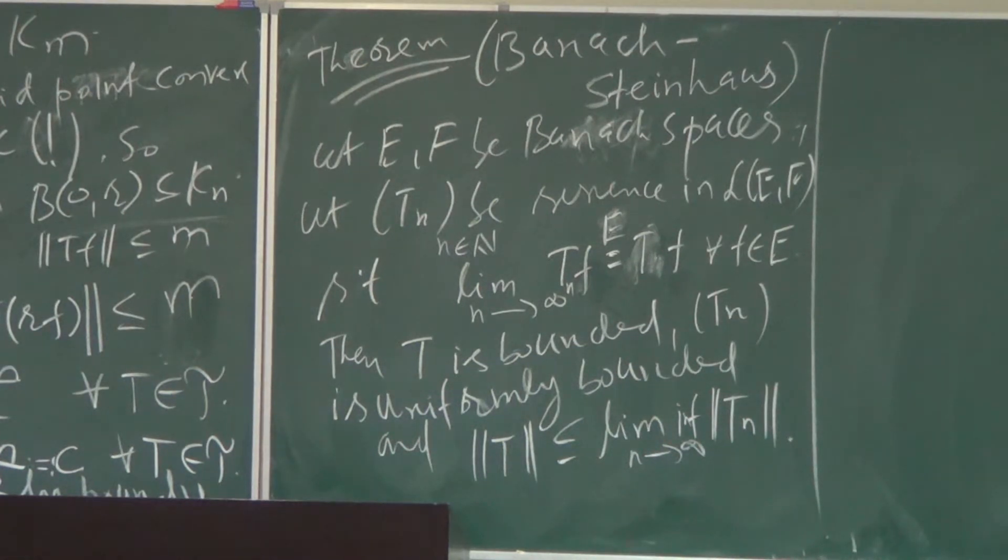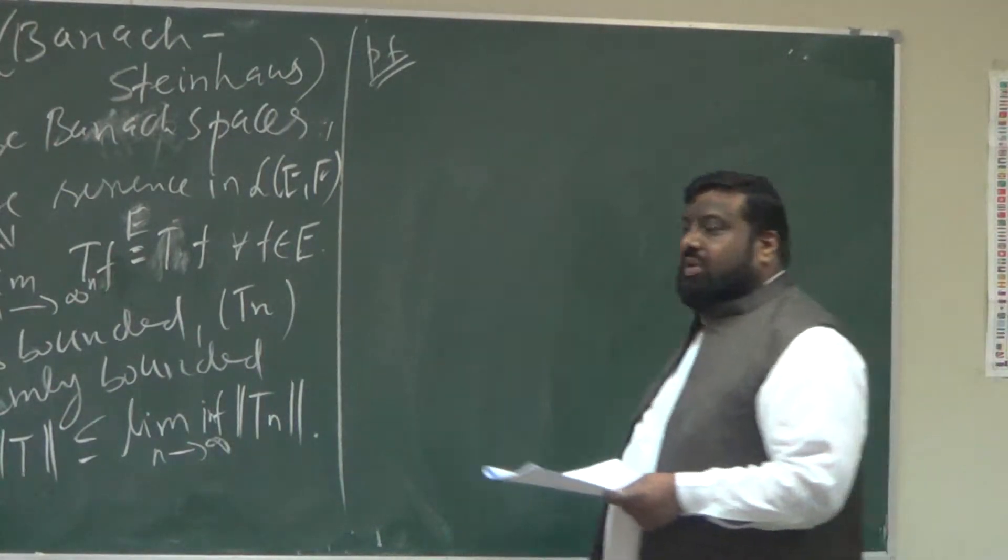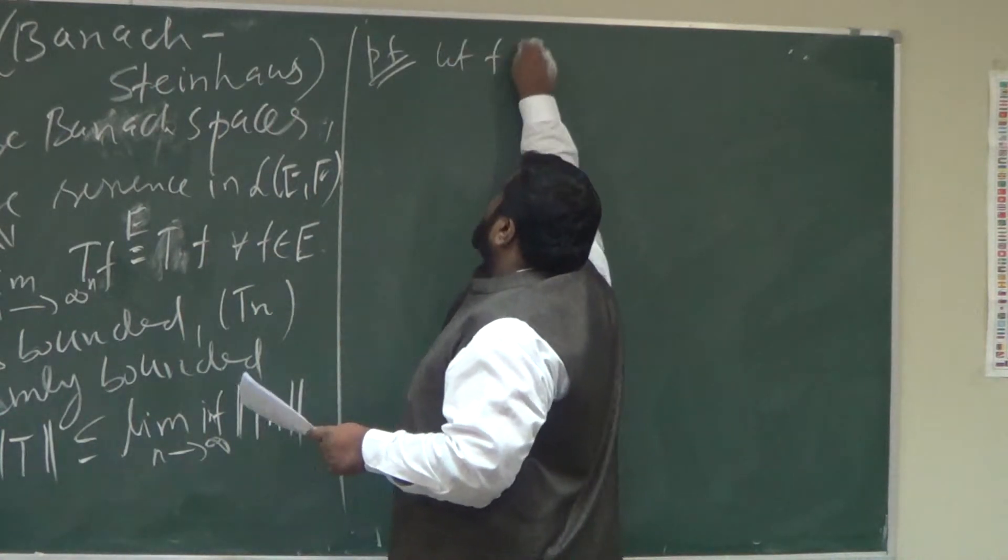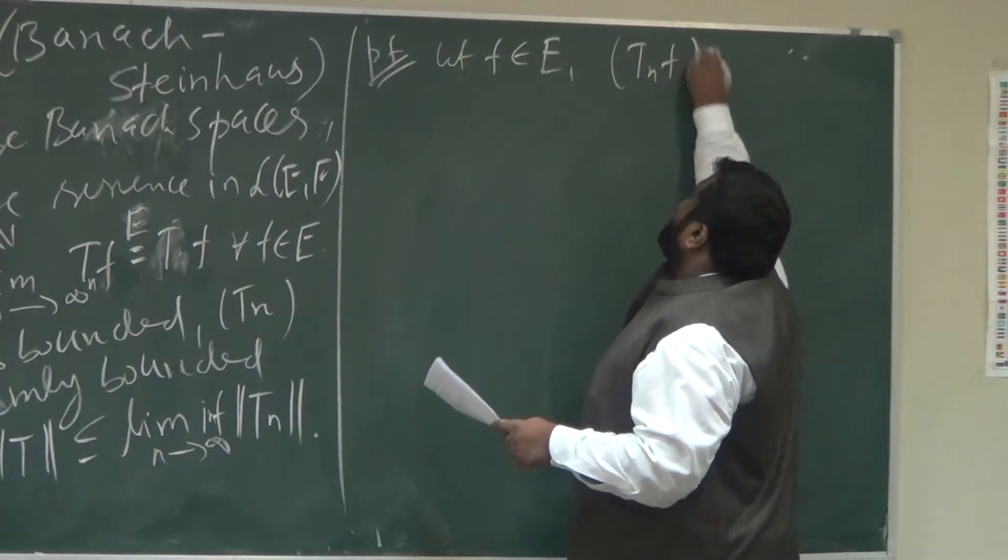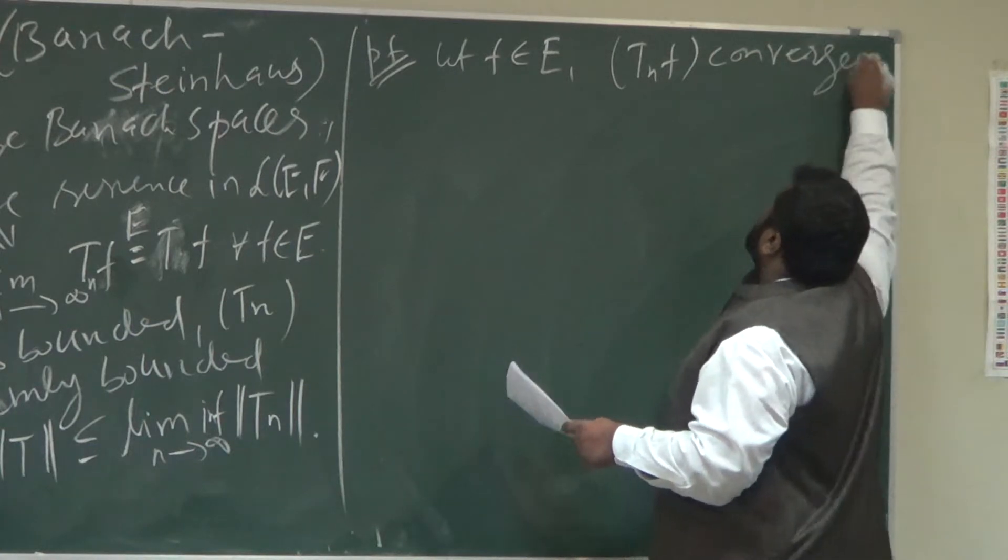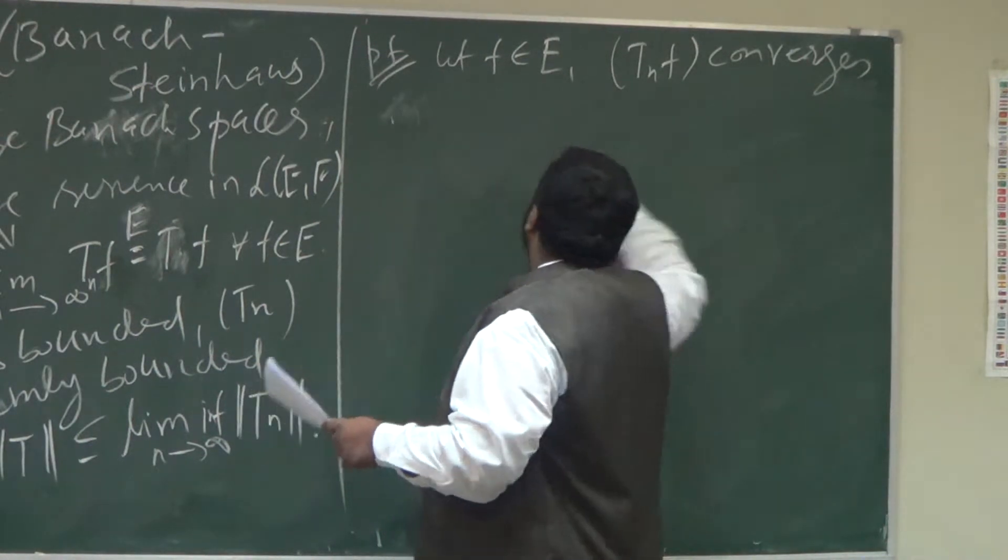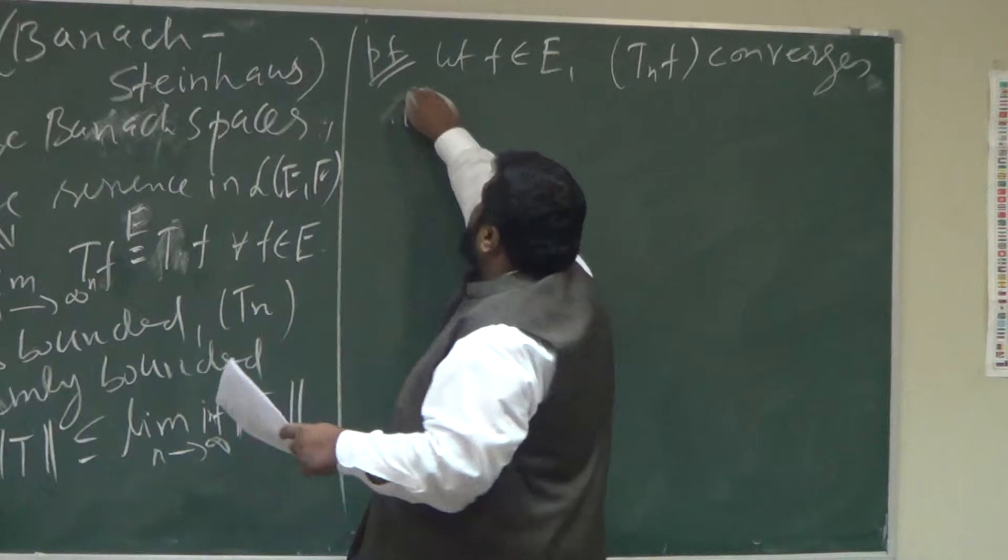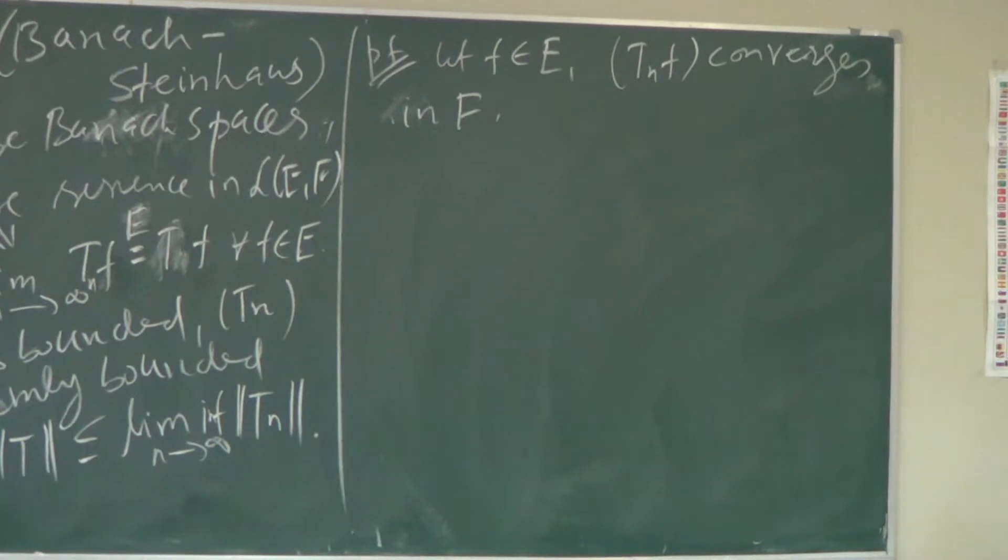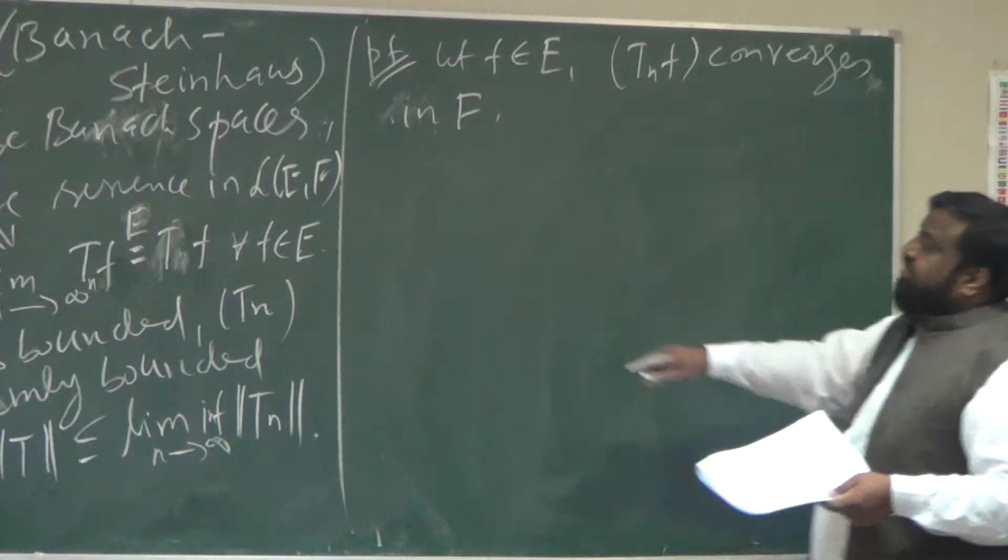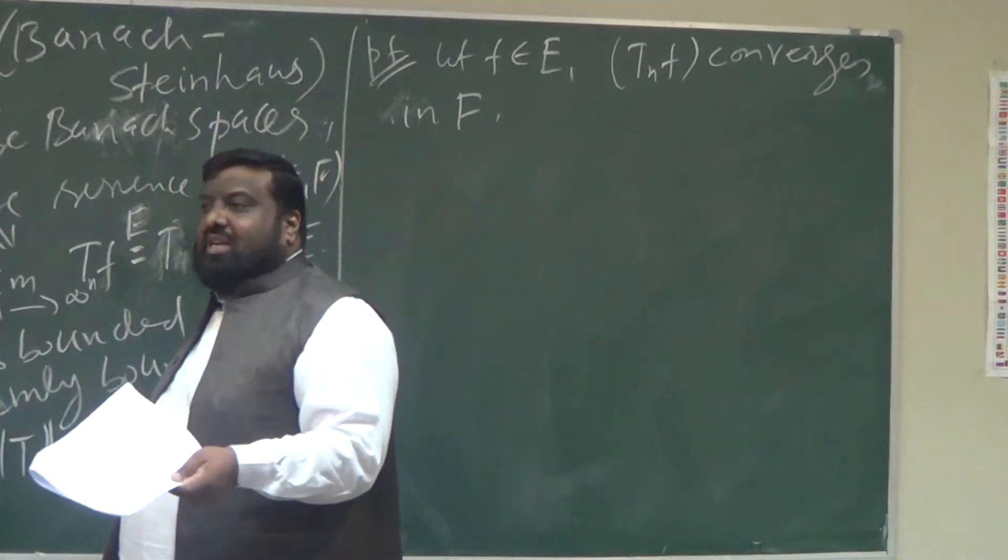So what will be the proof? The proof is a quick two-liner proof. Select F in E, then we know that Tn F converges. This converges in F. Tn F converges in F. But F is a Banach space.